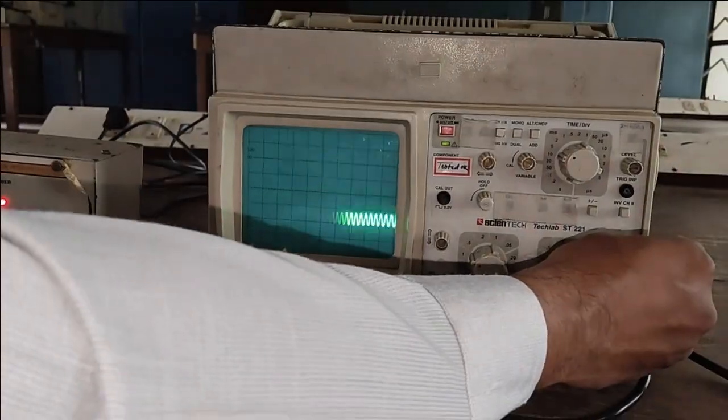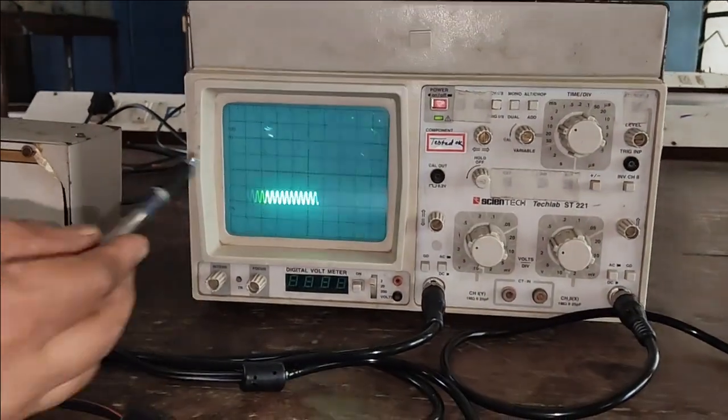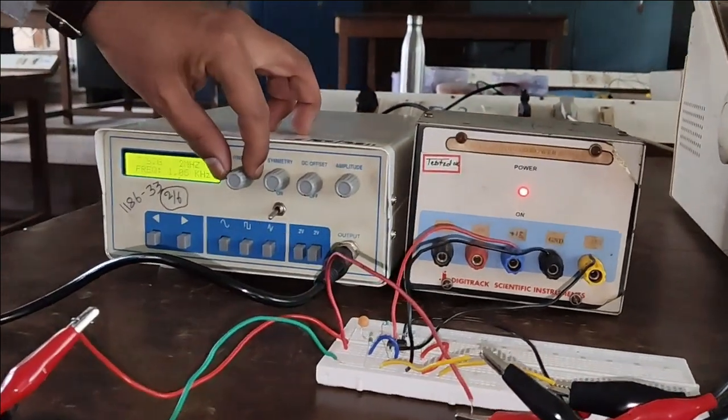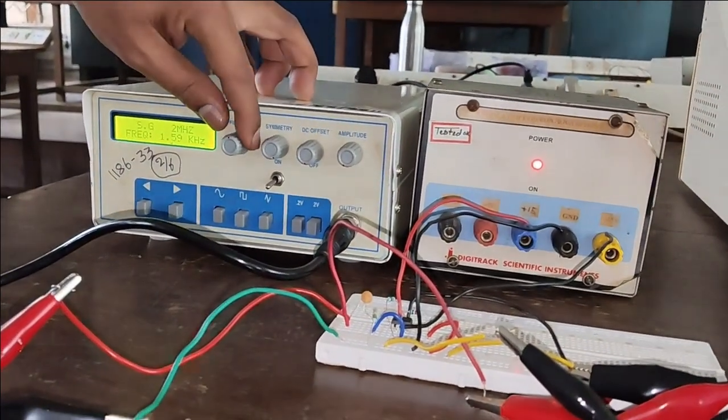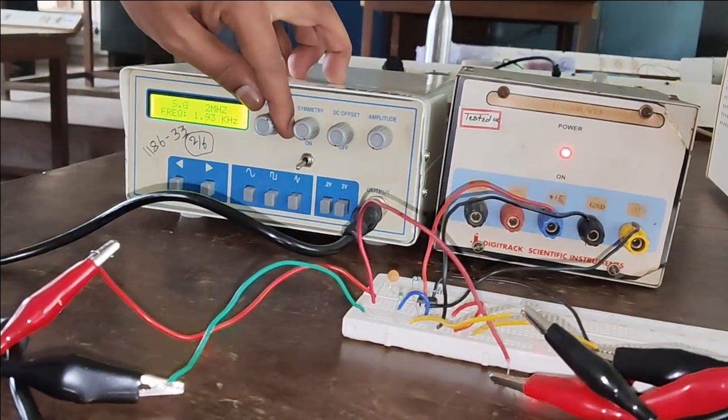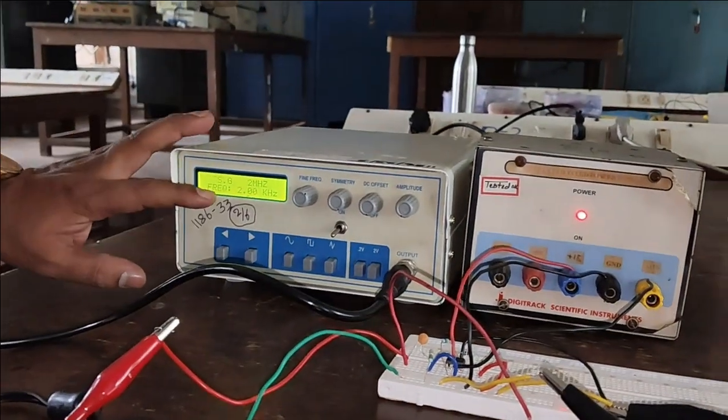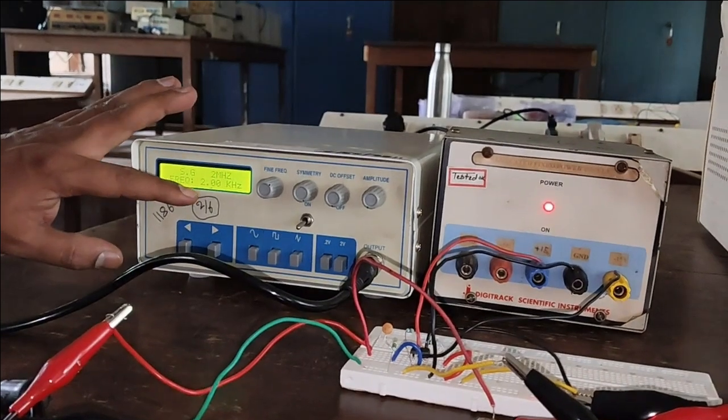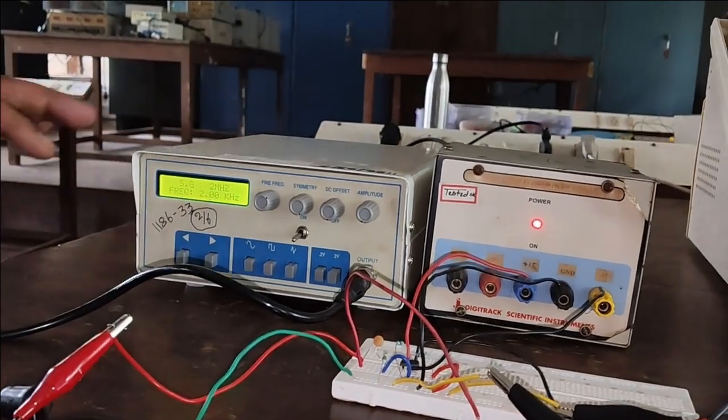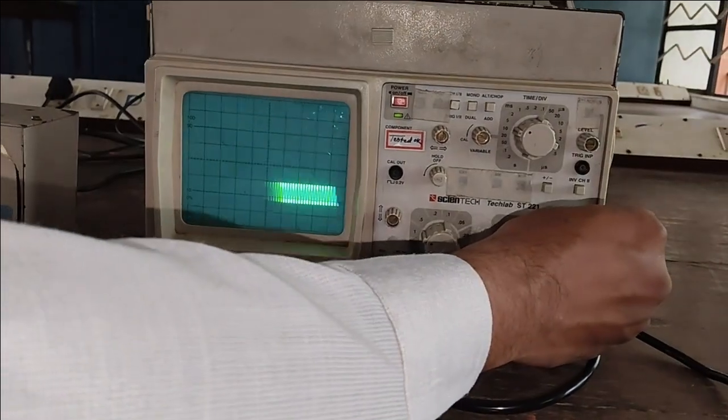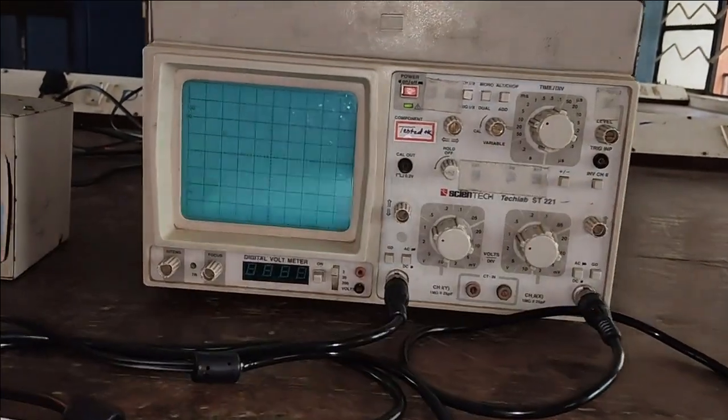Now instead of 1 kHz I will make it to 2 kHz. When I make this value as 2 kHz then output also increased from 0.8 to 1.2 volt.